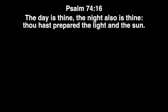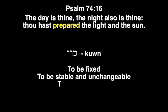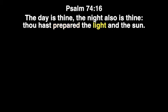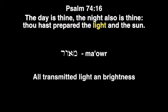Psalm 74:16 says, The word prepared is kun, and it means to be fixed, to be stable and unchangeable, or to be established. The word light is maor, which means all transmitted light and brightness. This verse unequivocally states that the natural laws governing the speed of light is the same today as it was at the beginning.